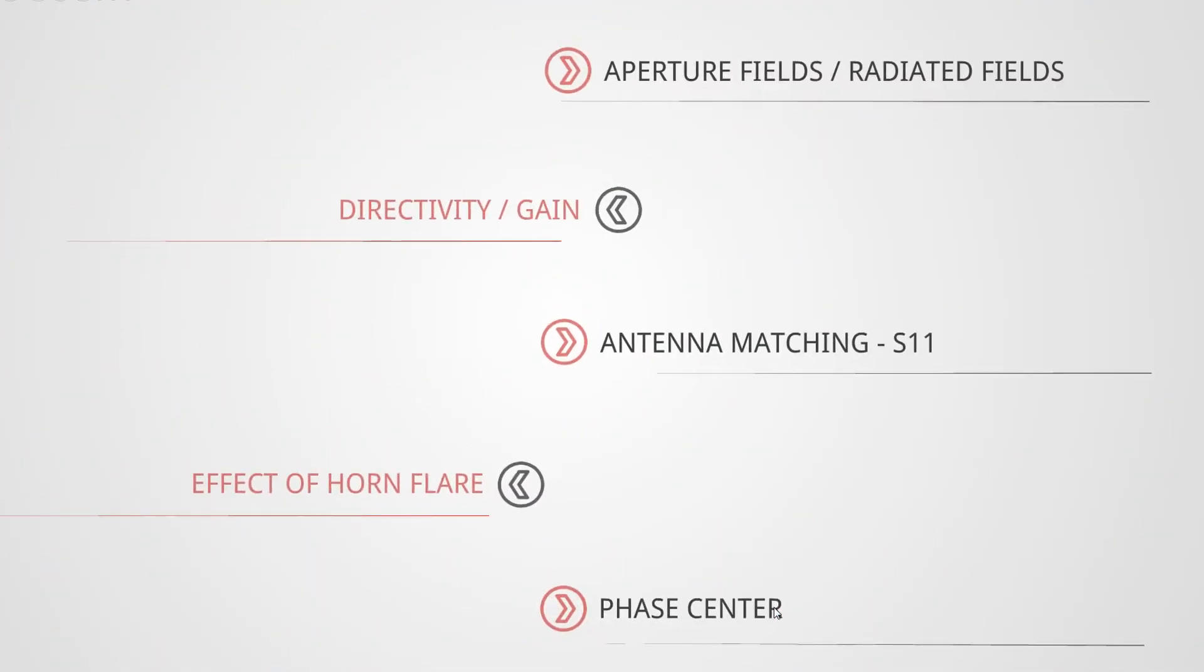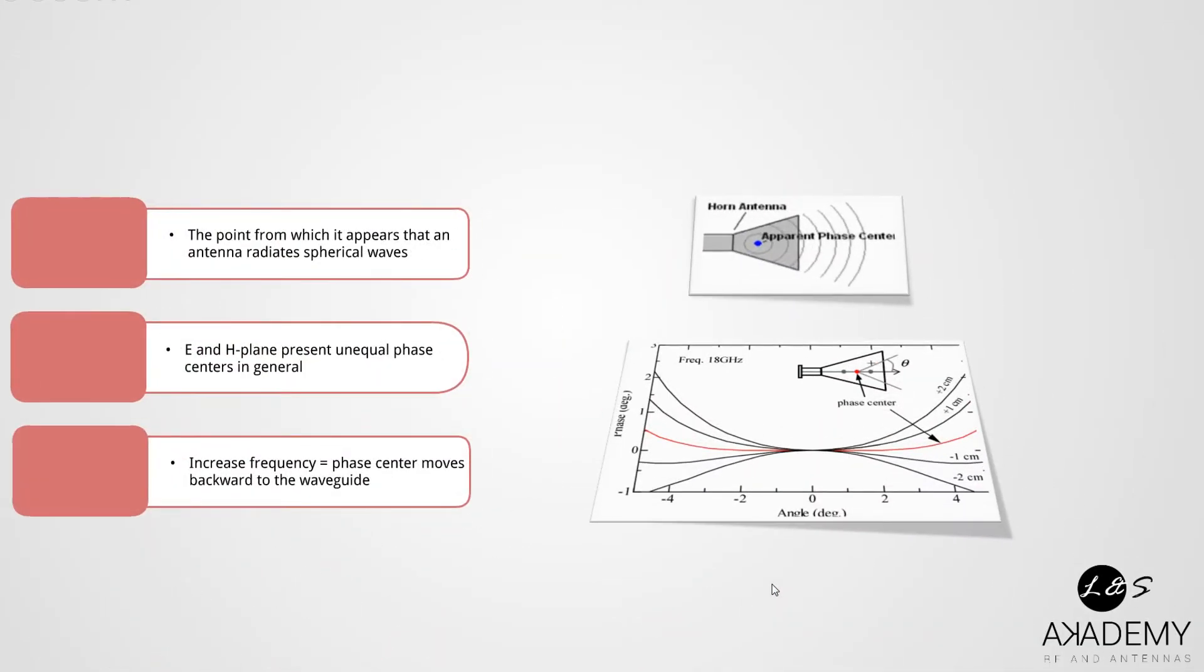So now, finally, we are going to talk about phase center. There we go. Here, regarding the phase center, we define the phase center as the point from which it appears that an antenna radiates spherical waves. And in general, the phase centers are unequal depending on the plane. For example, in the E plane the phase center could be in some point, and for H plane the phase center could be in a different point. And this is due to not having a symmetrical or pyramidal horn. So this effect takes place just for non-pyramidal antenna horns.